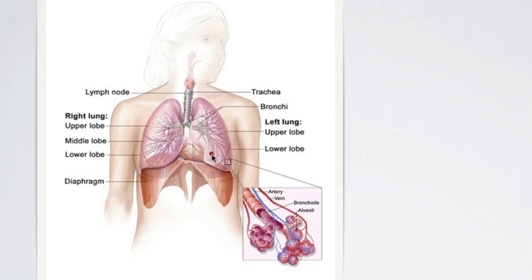We've also looked in the lungs and seen how we have the trachea going into the bronchi, and then that splits off into the bronchioles and gives us the alveoli. It's in the alveoli where we have the exchange between the oxygen coming into the bloodstream via the capillaries and the carbon dioxide leaving the capillaries going into the lungs and being sent from the body.